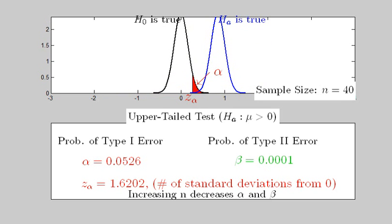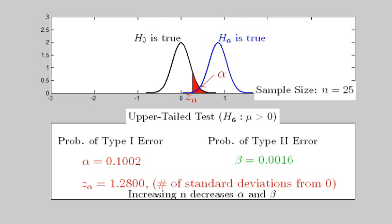The obvious goal here is to avoid both errors by rejecting H naught when it is false or failing to reject H naught when it is true.